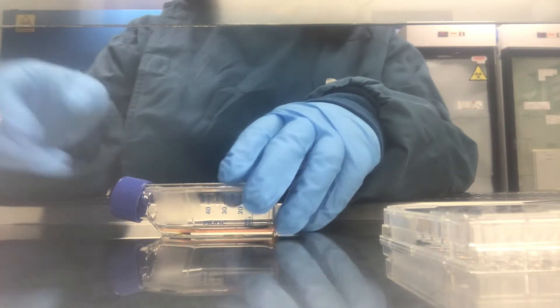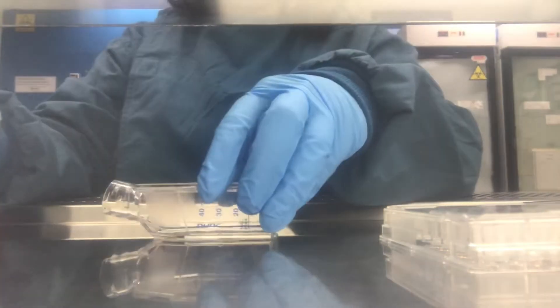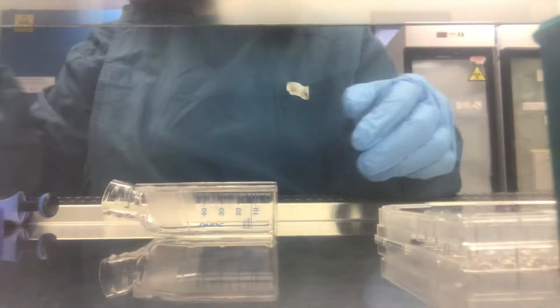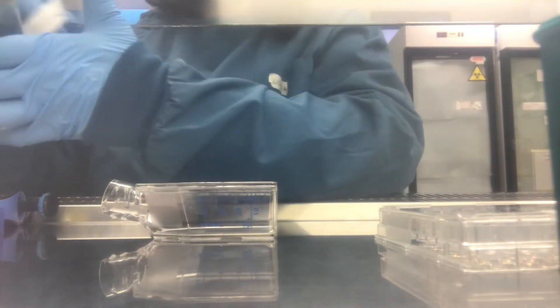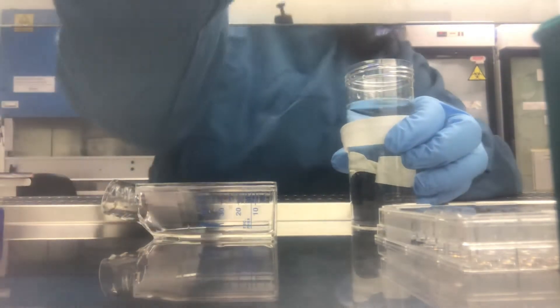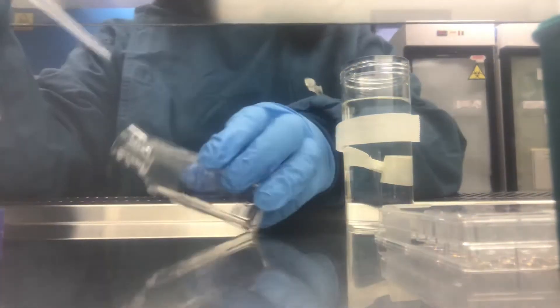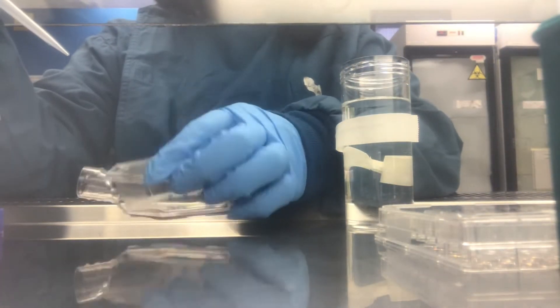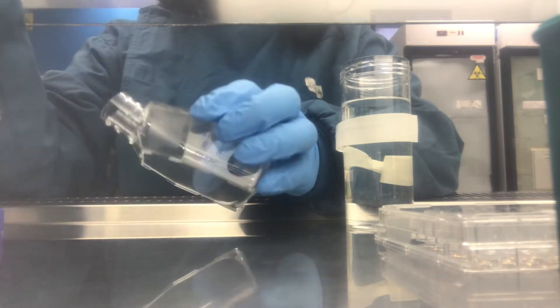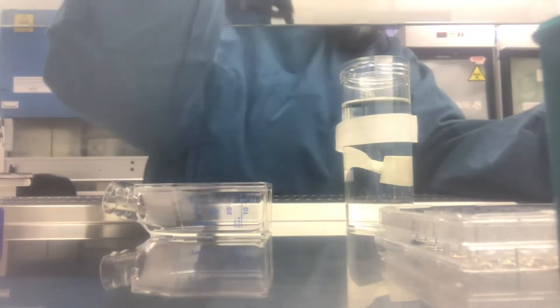Hello everyone, today we will know how to do cell counting. First, get your flask and discard the media. Then get your PBS to wash the cells so that you can get rid of any floating debris. Add around one ml of PBS to the flask, just cover the surface area, and then discard it.